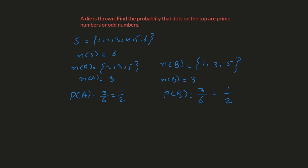First, what are the common elements of these two sets? A intersection B: the numbers common to both sets are three and five — so A∩B = {3, 5}. The number of elements of A intersection B is two. Therefore, the probability of A intersection B is two out of six, which equals one third.